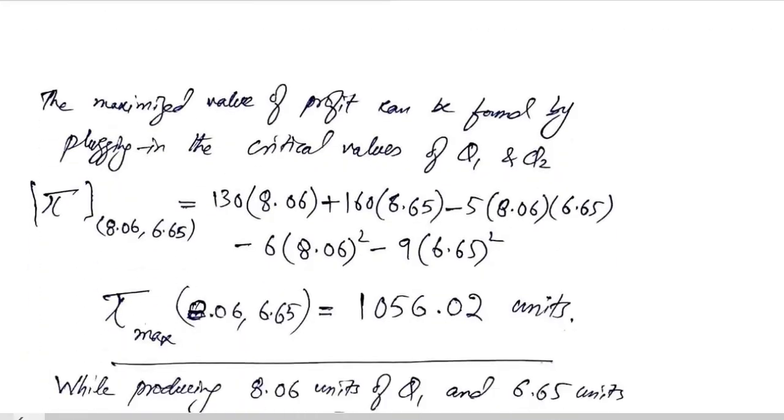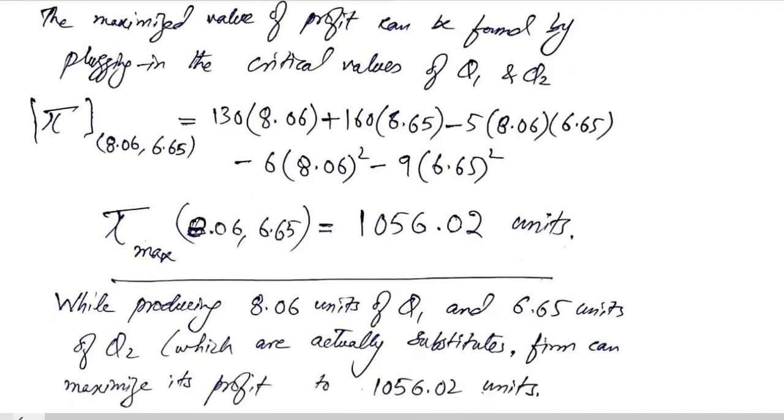We also try to find out the maximized value of the profit. That can be done simply by taking the original profit function and putting Q1 and Q2 in it. The values are put and the answer is 1056.02 units, which is the maximized level of the profit.